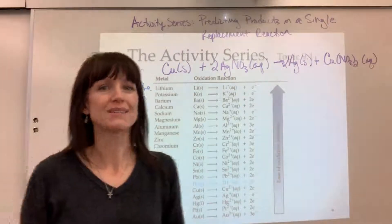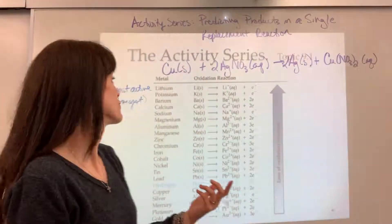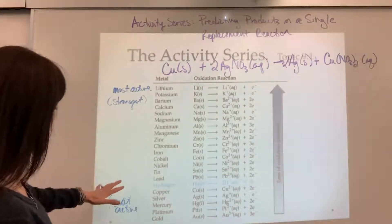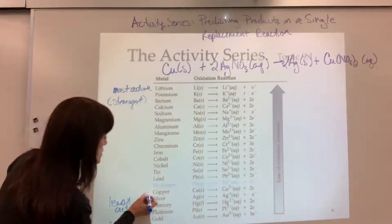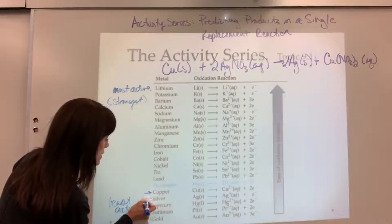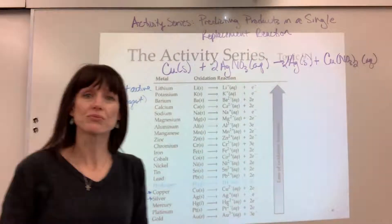Down below, these are going to be the least active, so be thinking the weakest. Now let's find our copper and our silver. Copper is right here, there it is. And here is silver. Here's your really big takeaway.